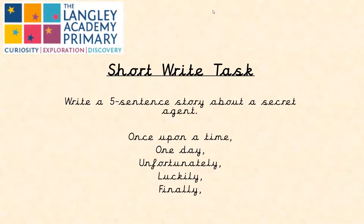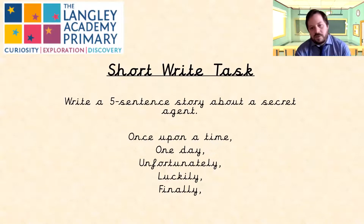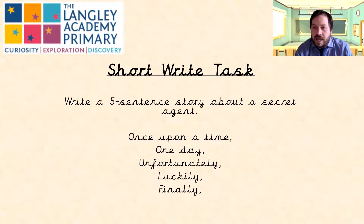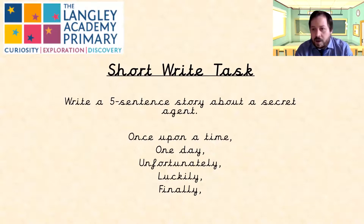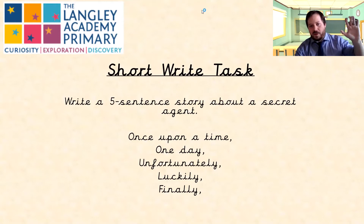Your short write task for today: I want you to write a five-sentence story about a secret agent, making it as interesting as possible. You have your sentence starters: 'Once upon a time,' 'One day,' 'Unfortunately,' 'Luckily,' and 'Finally.' Try to make it as interesting as possible. If you want to link it to Kit Marlowe, that's fine. Have fun with it — I'll see you in the next video. Goodbye.